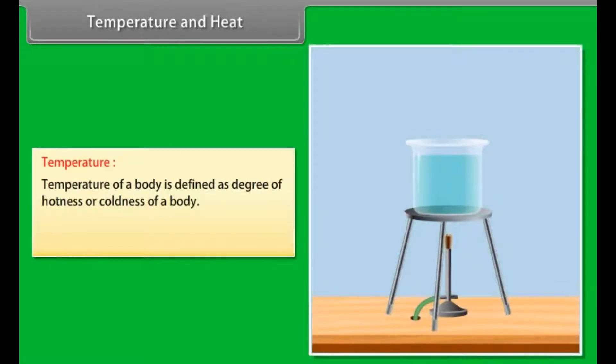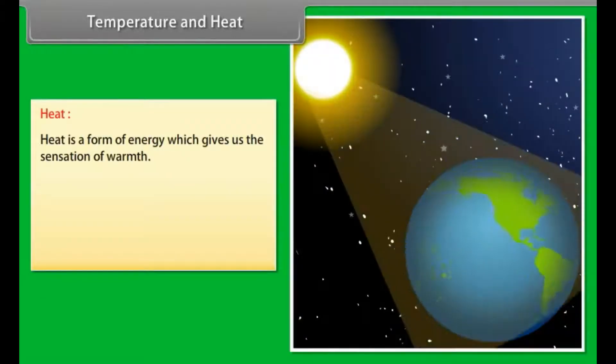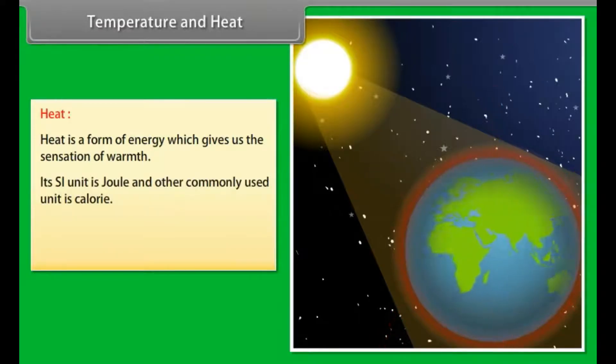Temperature and heat. Temperature of a body is defined as degree of hotness or coldness of a body. Its SI unit is Kelvin and degree Celsius is a commonly used unit of temperature. Heat is a form of energy which gives us the sensation of warmth. Its SI unit is Joule and other commonly used unit is calorie. One calorie is equal to 4.184 Joule. Its dimensional formula is ML² T⁻².